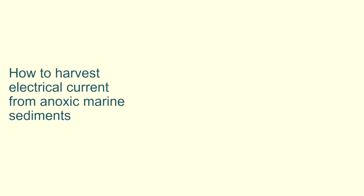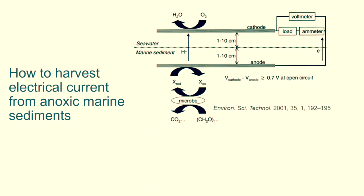Next, we discuss how to obtain electrical current from anoxic marine sediments. We can obtain electrical current from anoxic marine sediments by embedding electrodes anode in the sediment and connecting them via electronic circuits to similar electrodes in the upper aerobic seawater cathode.